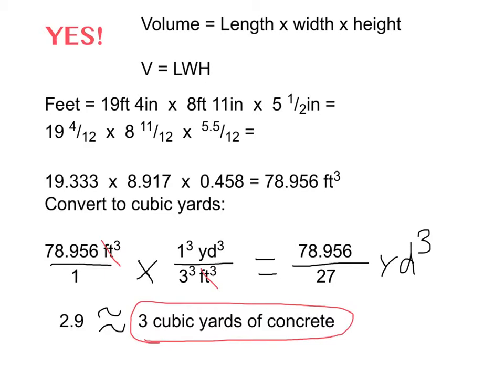And then 8 feet 11 inches as a mixed number is 8 and 11/12. And then 5.5 inches, I don't have a full foot there, it's part of the first foot. So there is no whole number, it's just 5.5 out of 12. Then take these mixed numbers and make them into decimals.